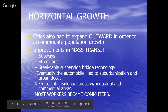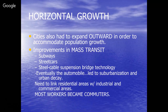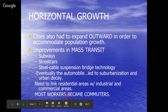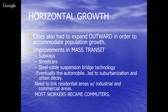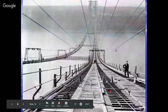Cities needed vertical growth and horizontal growth. Mass transit enabled people to live far from work — most workers became commuters during the Gilded Age. We're talking about subways, street cars, steel cables, and suspension bridge technology. These bridges enabled large metropolitan areas to grow over water. By the 1920s, the automobile would lead to further horizontal growth, suburbanization, and eventually urban decay. The first American city to build a subway was Boston; Chicago had its elevated street cars and San Francisco had electric street cars.